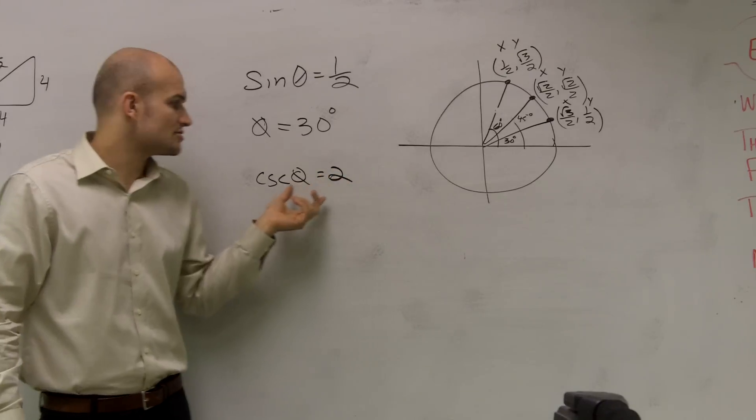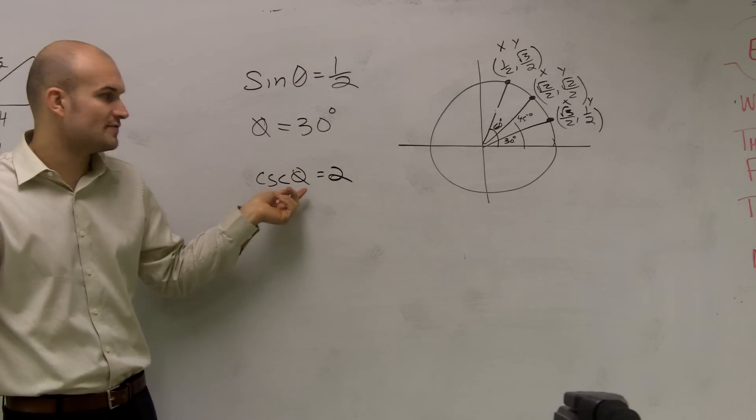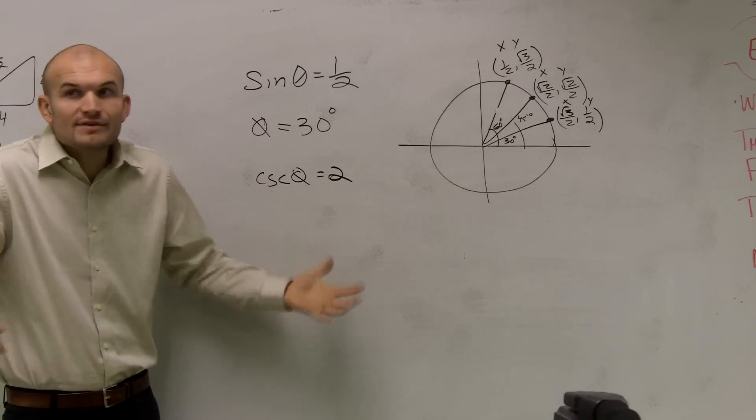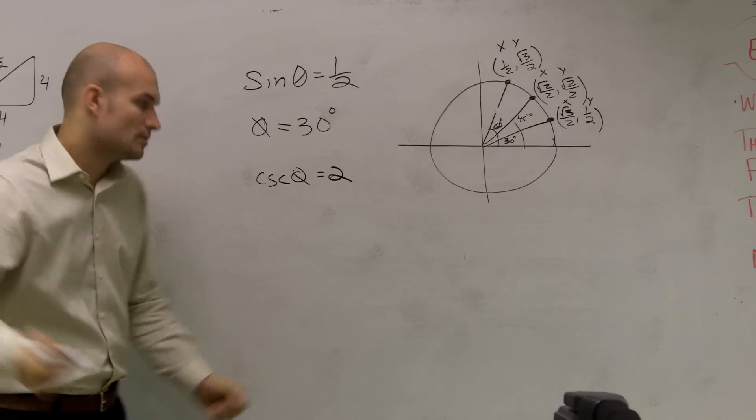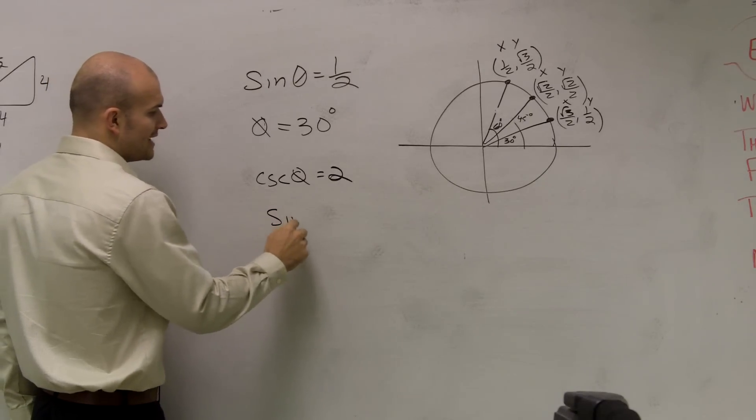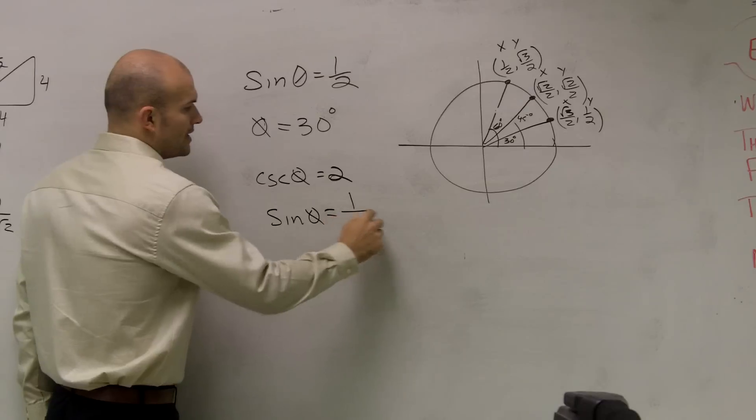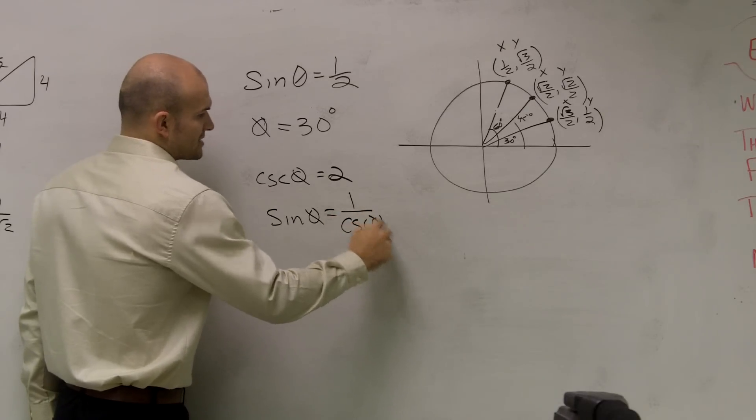So if I look at cosecant of theta of 2, what is even cosecant? Remember, sine of theta is 1 over cosecant of theta, okay?